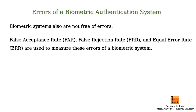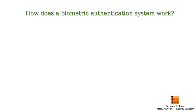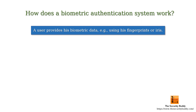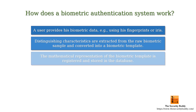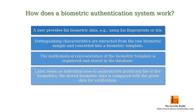A biometric system works in the following way. A user provides his biometric data, for example his fingerprints or iris. Distinguishing characteristics are extracted from the raw biometric sample and converted into a biometric template. The mathematical representation of the biometric template is registered and stored in the database. Later, when an individual tries to authenticate by producing his or her biometrics, the stored biometric data is compared with the given data for verification.